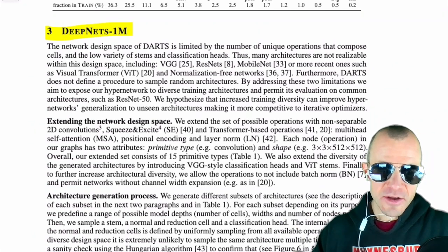DeepNets-1M is a dataset of training and evaluation architectures. It's called DeepNets-1M because we have 1 million training architectures. We predefine them and save them so that people can reproduce training. There is a misconception that we also have trained weights for those training networks, but no — we didn't train 1 million architectures.